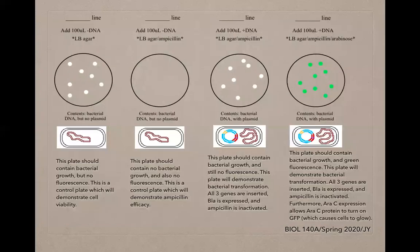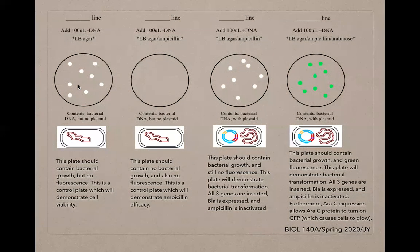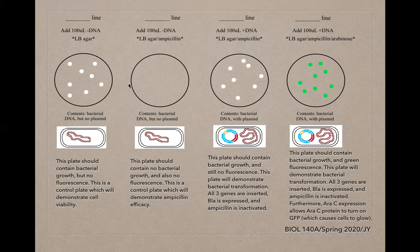To review: on the first plate, streaking untransformed bacteria onto plain agar shows cell viability — you will have bacterial growth but no fluorescence, due to no transformation occurring and no sugar present. This is a control plate that demonstrates E. coli cell viability. On the second plate, the untransformed sample is streaked onto agar with ampicillin, and you expect no bacterial growth, as ampicillin destroys the untransformed cells — demonstrating the effectiveness of the ampicillin antibiotic.